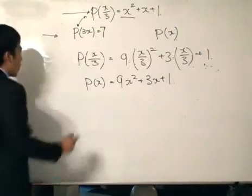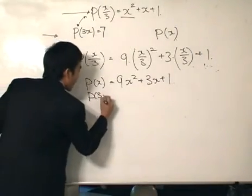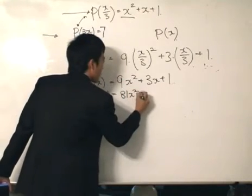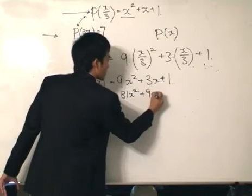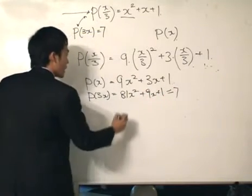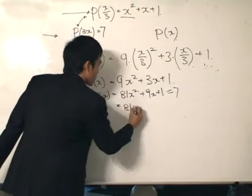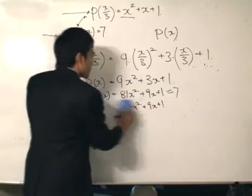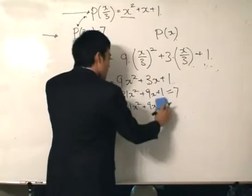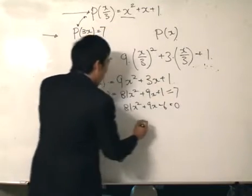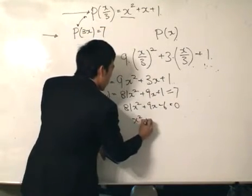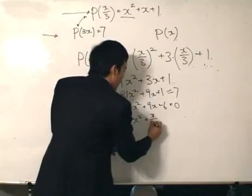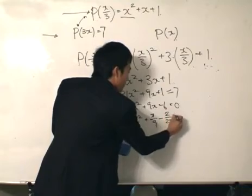So given that this is the function, now I can immediately go and solve the problem, which is P(3x). So 3, 9, there will be 81x squared plus 9x plus 1. This is equal to 7. And then 81x squared plus 9x plus 1, sorry, then bring the 7 over. So it will be minus 6 equals to 0. Divide throughout by 81 so that we get 1, a constant x squared term over here. This becomes x over 9 minus 2 over 27. I believe that's correct.